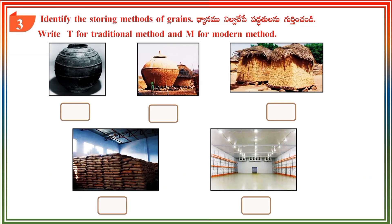Section 3: Identify the storing methods of grains. Mark T for traditional method and M for modern method.